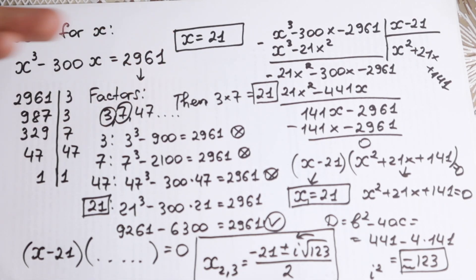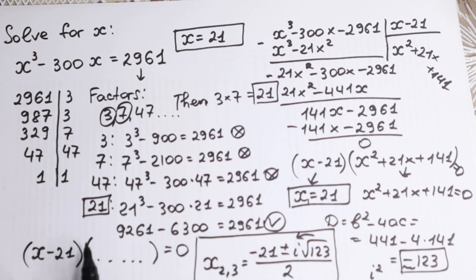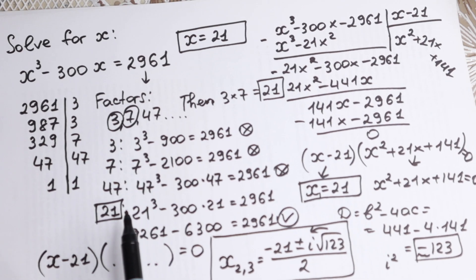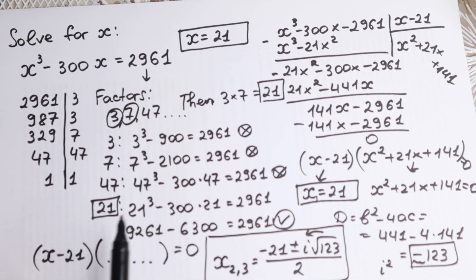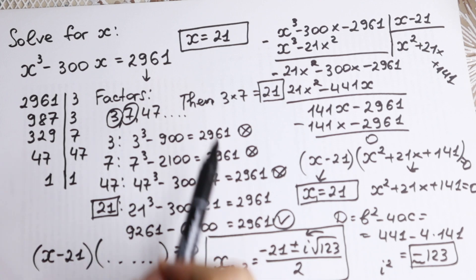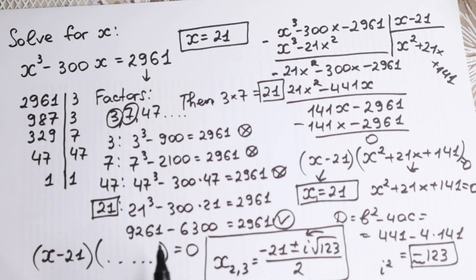To summarize: x = 21 is our real number root — you can verify by computing 21 cubed minus 300 times 21 = 9261 minus 6300 = 2961. The complex roots are (negative 21 ± i√123) / 2. If you have any questions, write them in the comments. Thank you for supporting my channel — your likes and subscribes help a lot. See you in the next video!